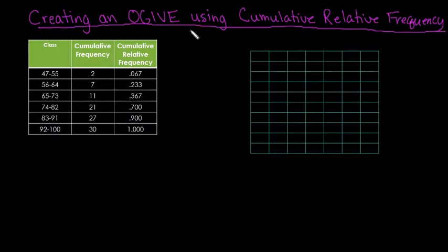It's very similar to create an ogive using the cumulative relative frequency as when just using the cumulative frequency. We would put on our y-axis the cumulative—it's hard to write sideways—relative frequency.